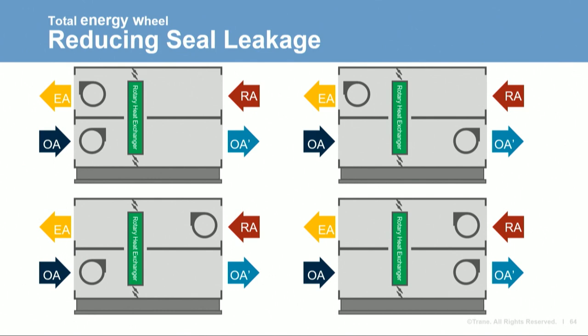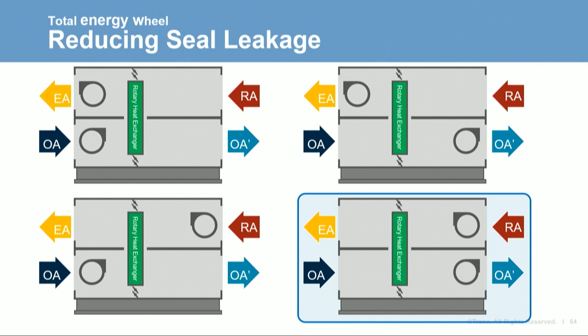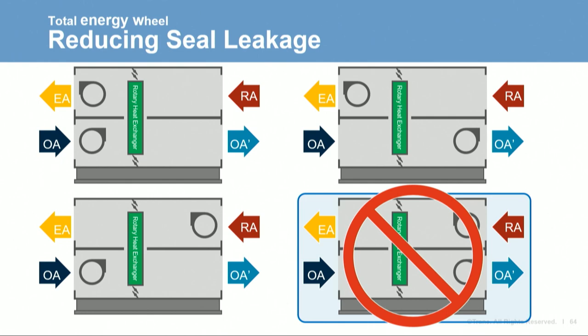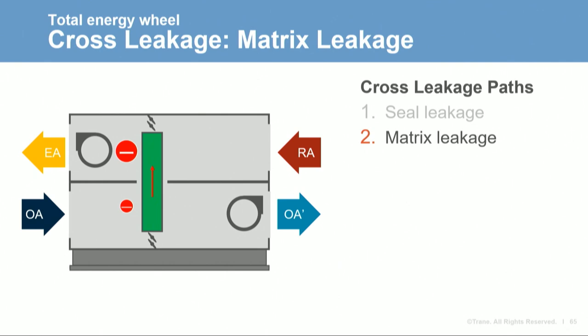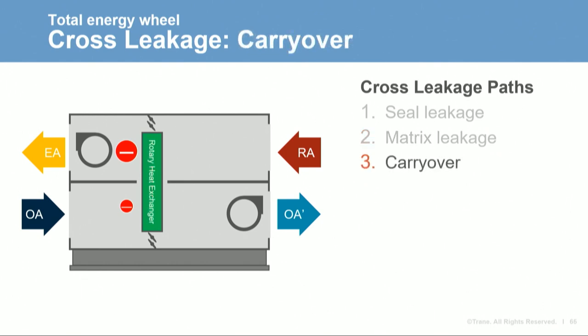The pressure differential between the exhaust and outdoor air paths should be minimized through careful fan placement. Various configurations exist — the fourth arrangement with a blow-through exhaust fan and draw-through supply fan will have the supply side as the lower pressure side, resulting in leakage from exhaust to supply, which is usually undesirable and not recommended. The wheel matrix can be manufactured in different ways; some designs allow air to migrate through the wheel causing matrix leakage. A third source is carryover, where air is entrained in the wheel as it rotates into the other airstream. A purge section can be added to flush the wheel with supply air to reduce carryover.